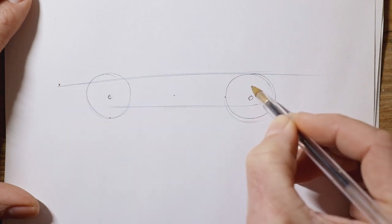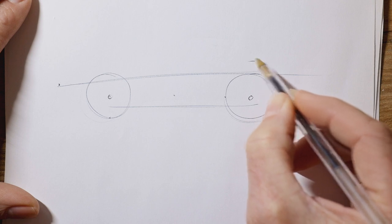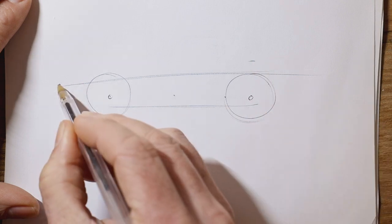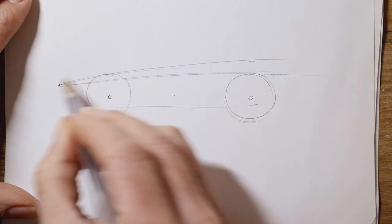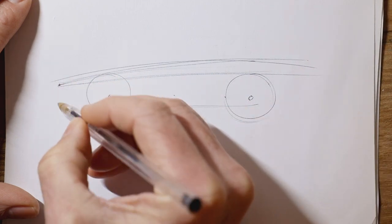The next one, we need to go through a point about a third of a wheel higher than the back wheel. Again, starting there. Not my best one, but there we go.